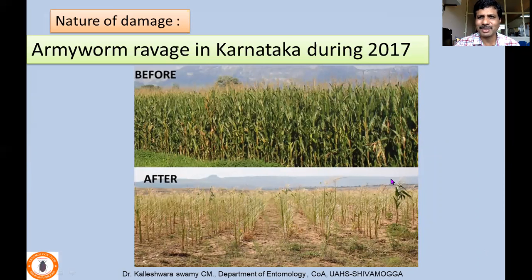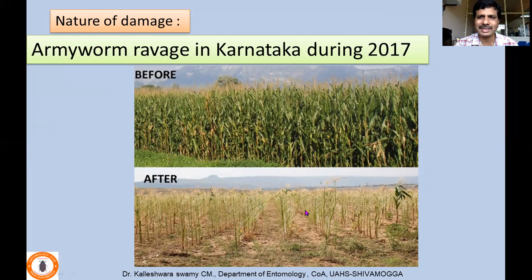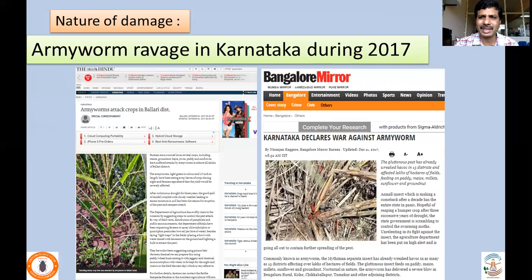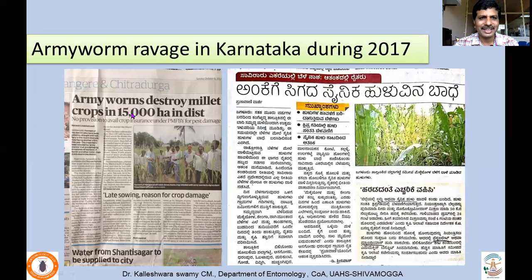You can see how the insect becomes very problematic to farmers. Within a span of one week to ten days, you can see complete defoliation, leaving only the main stem and midrib in maize or any other crop. Yield is directly proportional to the photosynthetic rate, so if completely defoliated, you can expect very poor yield. This happened in 2017 in Karnataka and many parts of southern states, becoming national news with wide media coverage — 'Karnataka declares war against armyworm,' armyworm attacks in Bellari district, destroying millet crops across 15,000 hectares in Davanagere.